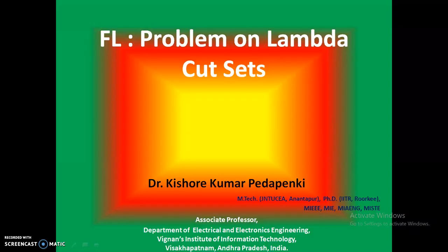In the last class we discussed lambda cut sets, or alpha cut sets, to convert fuzzy sets into crisp sets — that is the process of defuzzification. We have already completed lambda cut sets under the heading of defuzzification. Now let us see how exactly this works by taking an example and discussing a problem on lambda cut sets.